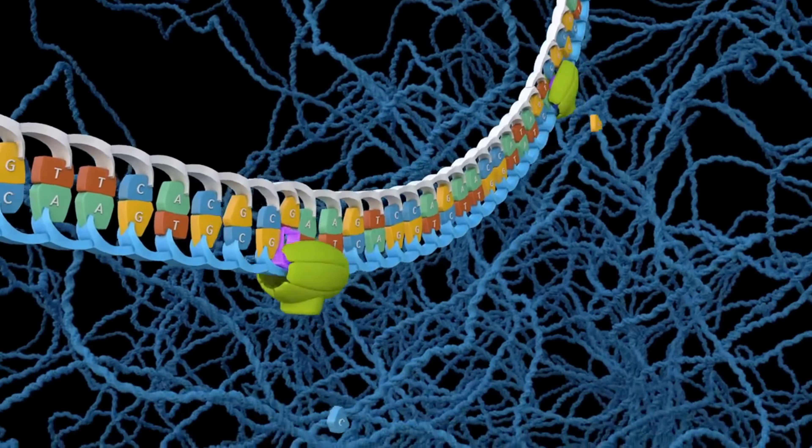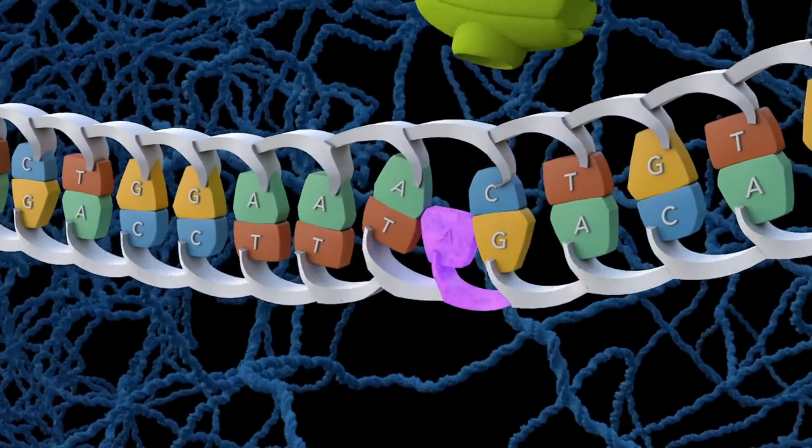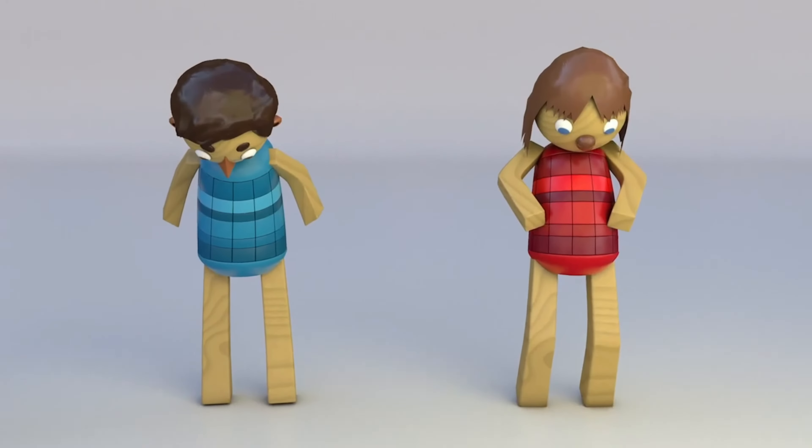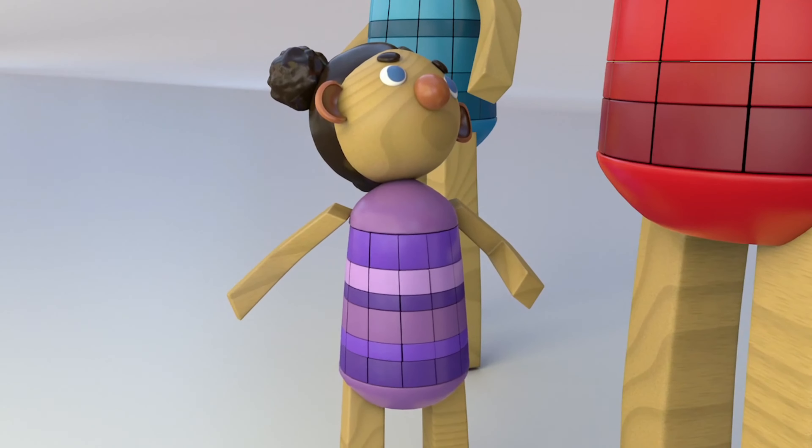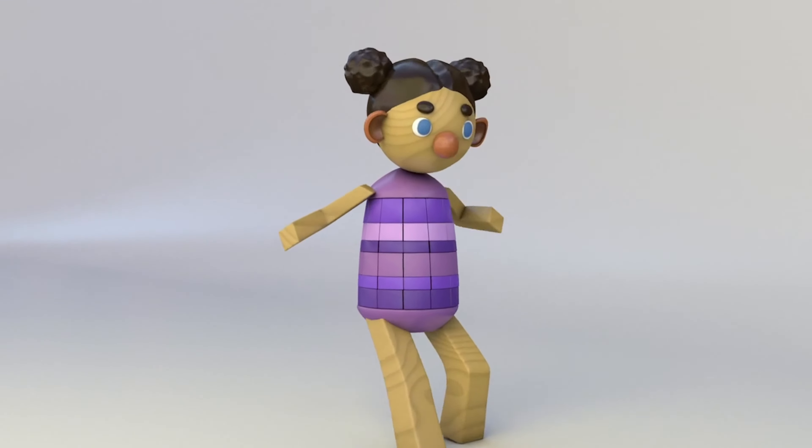Each round of cell division introduces a few changes that are not repaired. When DNA changes occur in cells that will give rise to eggs or sperm, they can be passed down to offspring. Each one of us has about 60 new variations that were not present in our parents.